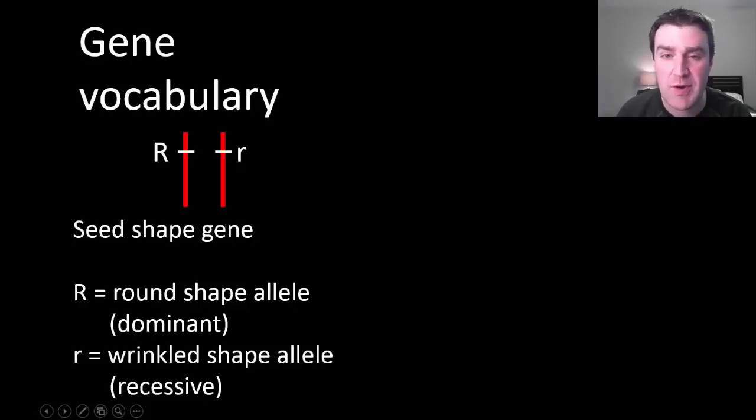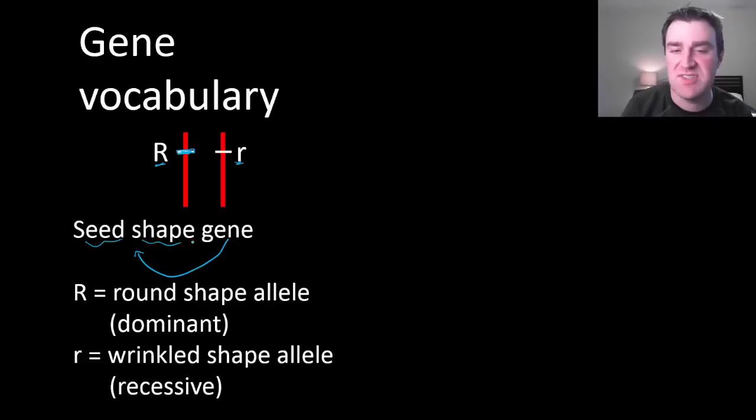All right, so now that we've done some basic chromosome vocabulary, let's do some gene vocabulary. So maybe this little hash here represents that this particular gene is in this part of the overall chromosome, and maybe this gene helps determine the shape of seeds in a certain plant. So maybe this organism actually has two different versions of that gene, and that's what we're doing with the uppercase and lowercase. If the gene is like the overall category, seed shape, then we call the different possibilities for that gene alleles.